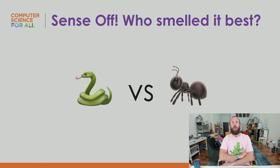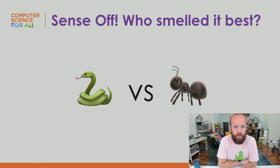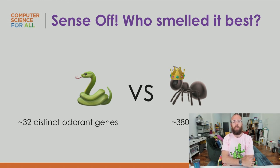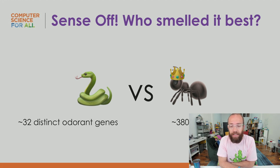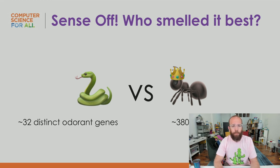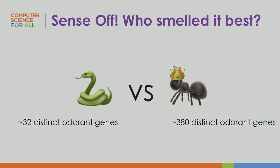Sense-off: snake versus ant — who smells better? Ants smell better. They have 380 distinct odor genes, and based on that number, ants smell significantly better than snakes.